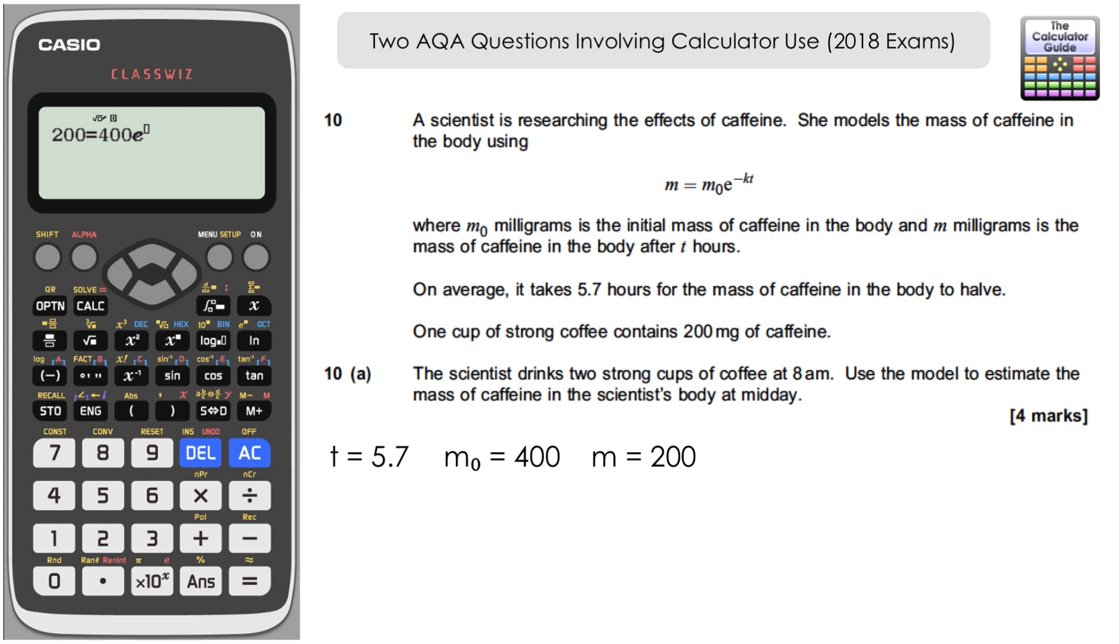We're going to have to use a different letter to substitute in for k because there isn't a k available on the FX991EX. I'm going to use A instead. So alpha and A and then multiply by 5.7. I would introduce a multiply there as well just so the calculator is completely certain about what's going on. We know it's minus k which has become minus A multiplied by the time of 5.7.